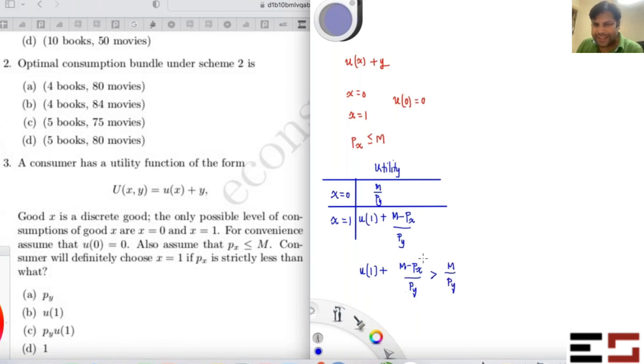Now you can just cancel M by P_Y. And you will get u(1) should be bigger than P_X by P_Y. Which would mean that P_X should be less than u(1) times P_Y. That's it.